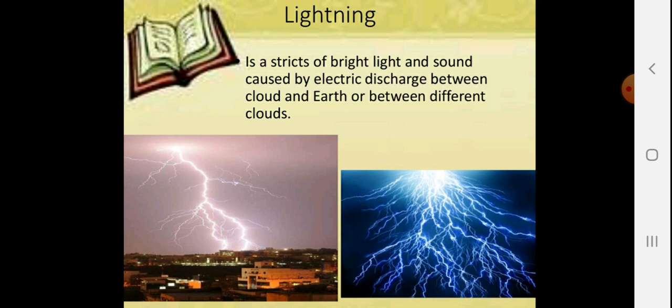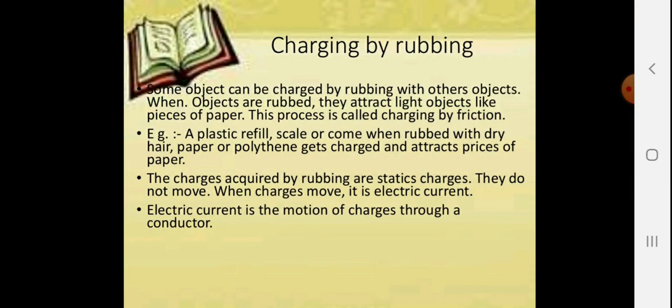Some objects can be charged by rubbing with other objects. When objects are rubbed, they attract light objects because they get some electrostatic force. This process is called charging by friction.